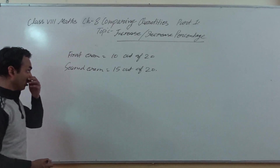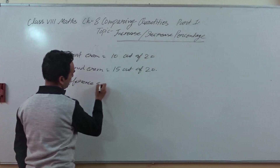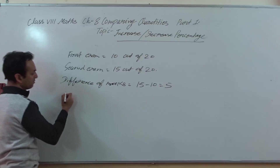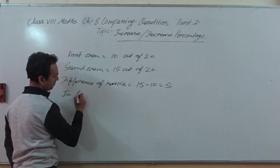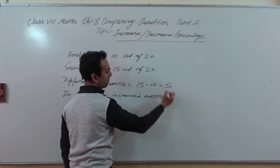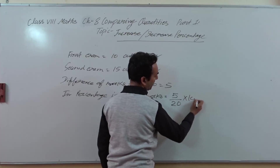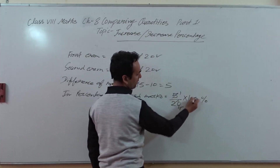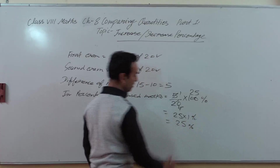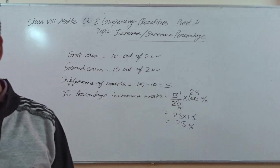First of all we find the difference of marks: difference of marks equals 15 minus 10 equals 5. Now we will find the increase in percentage. 5 marks increased, out of 20 — so 5 upon 20 into 100 percent. Simplifying: 5 upon 20 into 100 gives 25 percent. It means you have scored well — you have increased your marks by 25 percent.